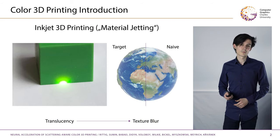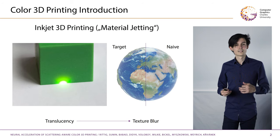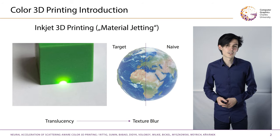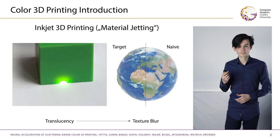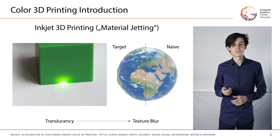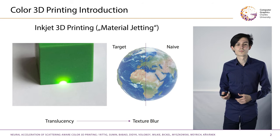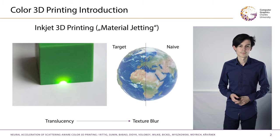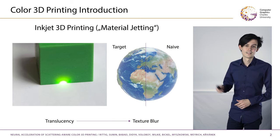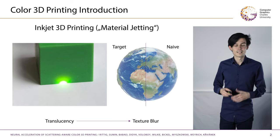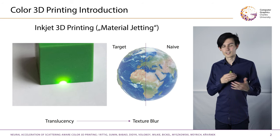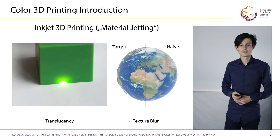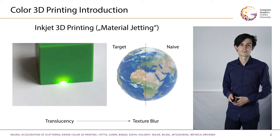The intrinsic problem of the technology is the translucency of the materials. It is required for mixing of colors, but it also leads to texture blur and unwanted color gamut limitations. A naive solution that just extrudes surface color loses all the modified details and has a lower overall contrast.